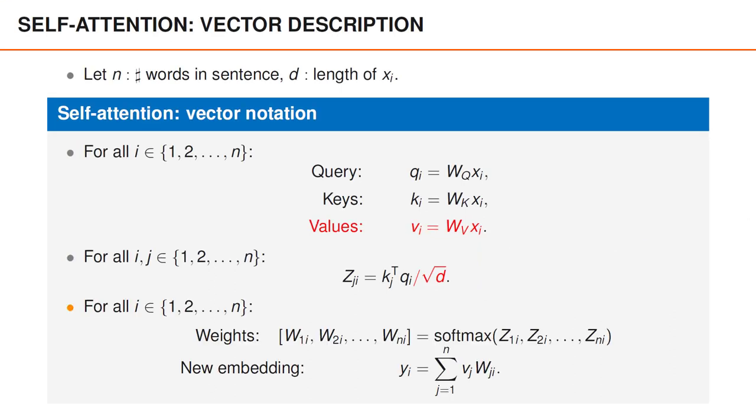Once we have computed the z values we will go through all the words and do the following. We pass z1i to zni through a softmax to compute the weights. Here the index i corresponds to the index of the query vector which is also the index of the word for which the obtained weights are used to compute a new word embedding. Finally we compute the new word embedding for word i by taking a weighted average. Note that the vectors that we are averaging are the value vectors and not the input vectors. As mentioned previously this is one of the two differences compared to our description in the previous video.